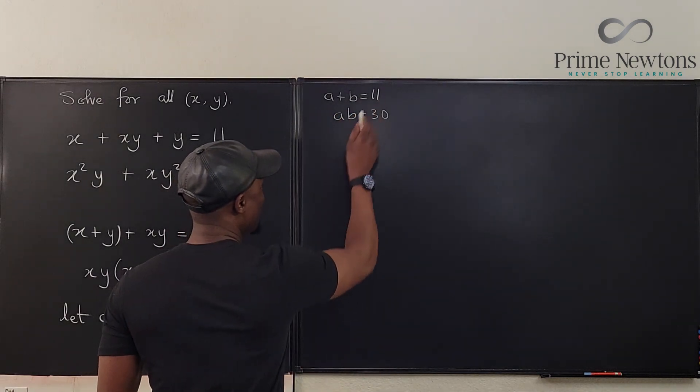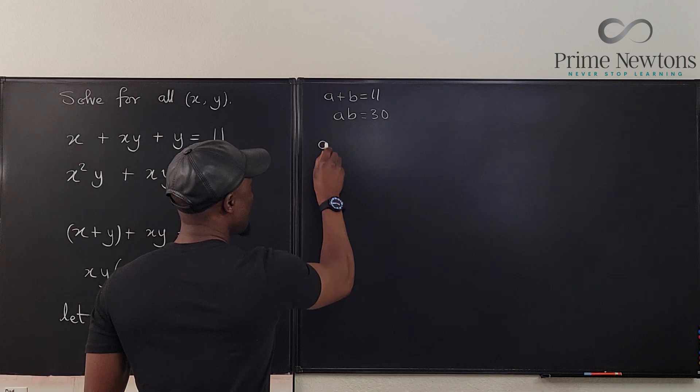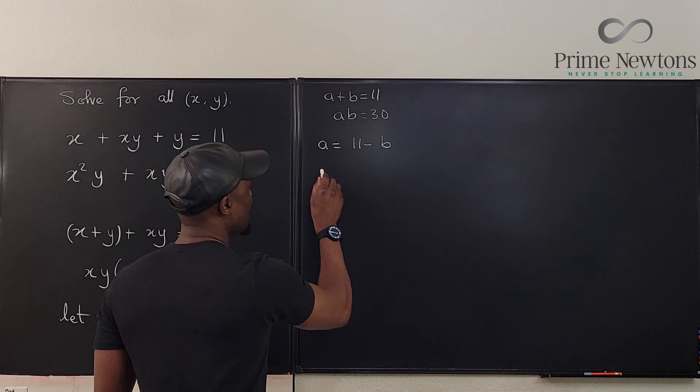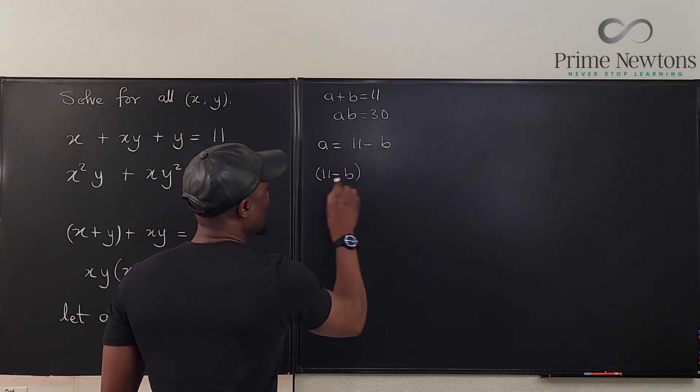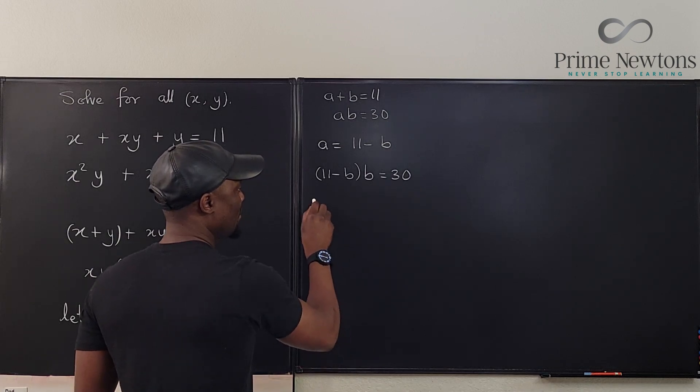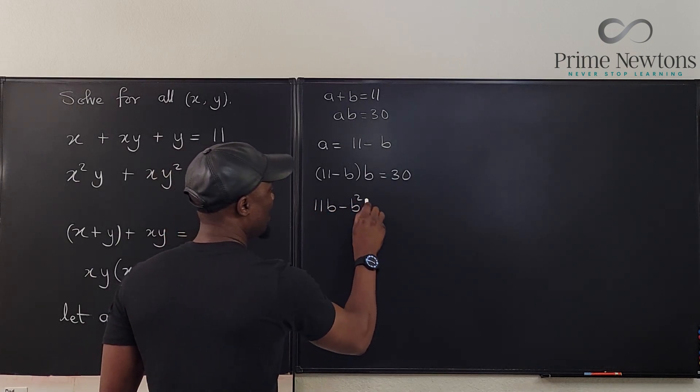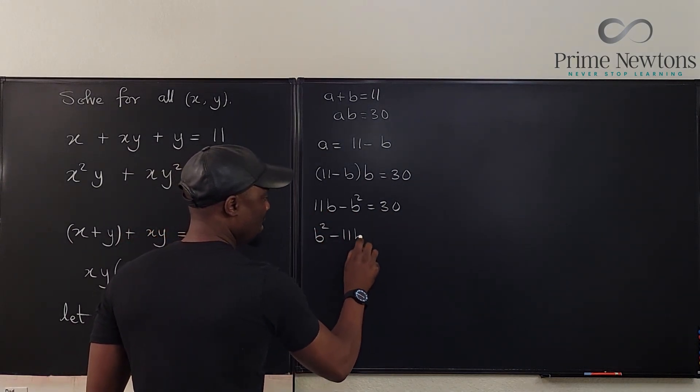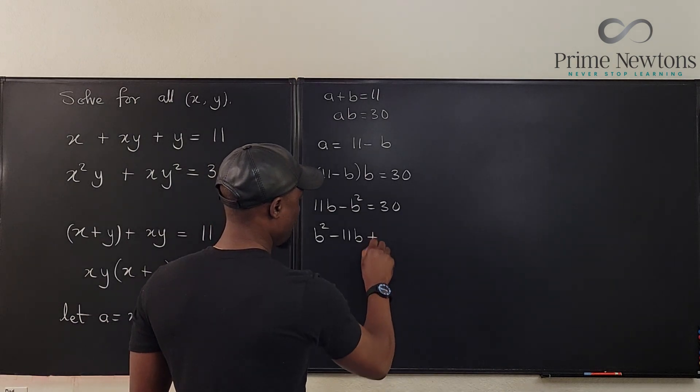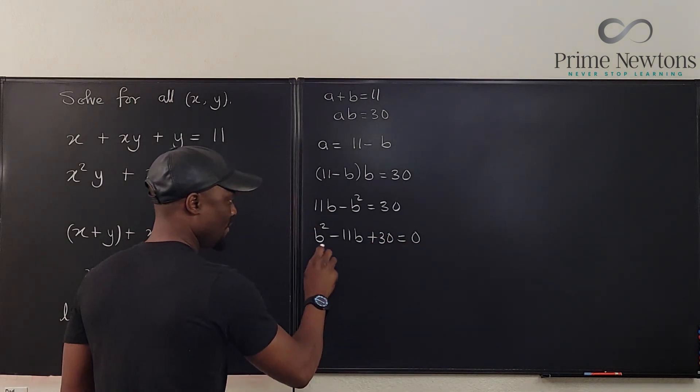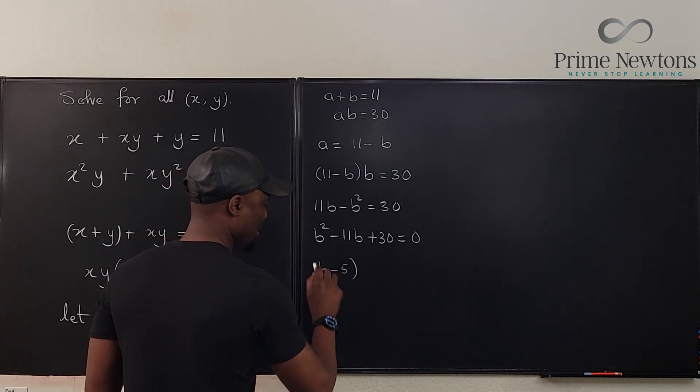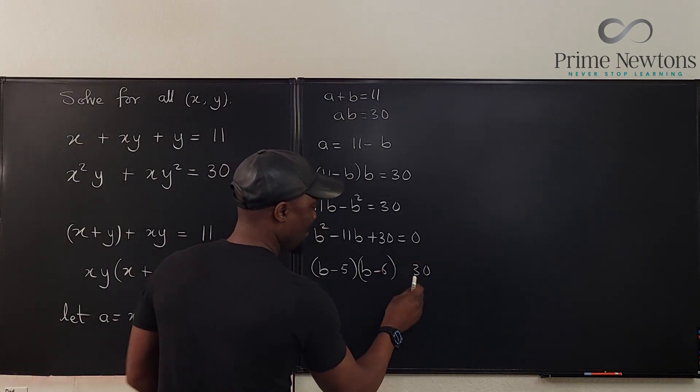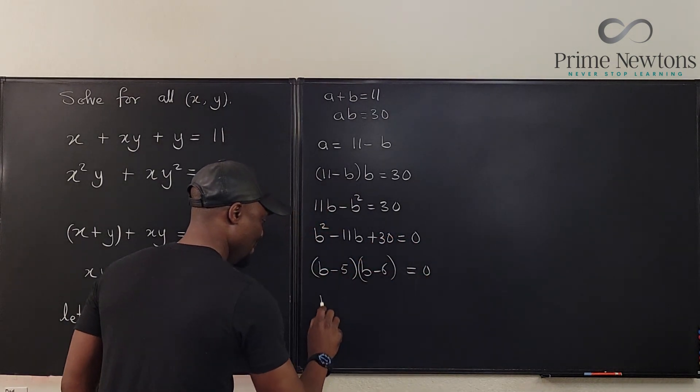From equation one we know from here a equals 11 minus b. So we can go here and say that 11 minus b times b equals 30. If we distribute this you got 11b minus b squared equals 30. You make a quadratic out of this, you get b squared minus 11b plus 30 is equal to 0. If you factor this you get b minus 5, b minus 6 equals 0.